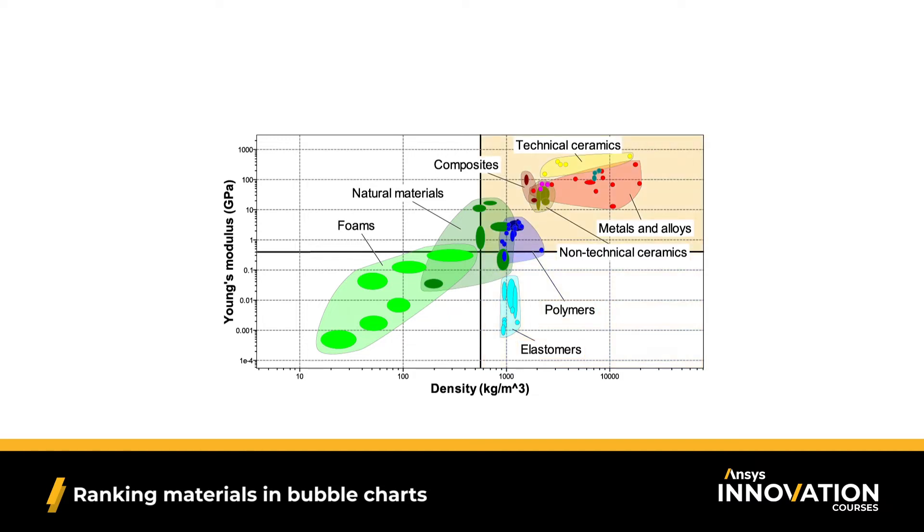Next we move to our upper right-hand corner, where we have high density and high stiffness materials. Our technical ceramics and metals can be found here, with composites sitting right at the edge.